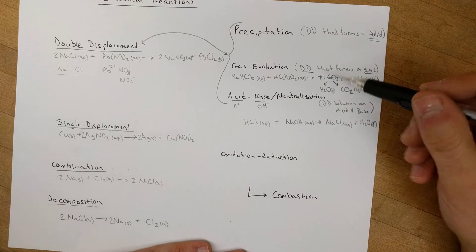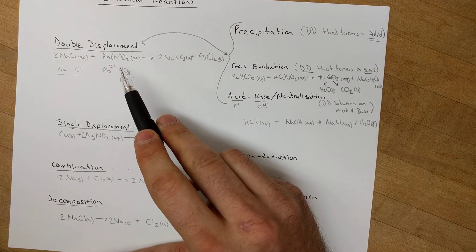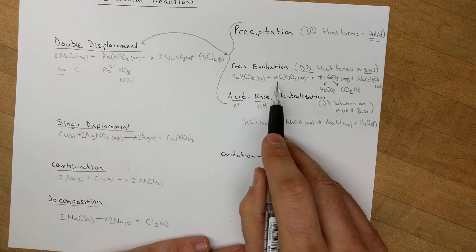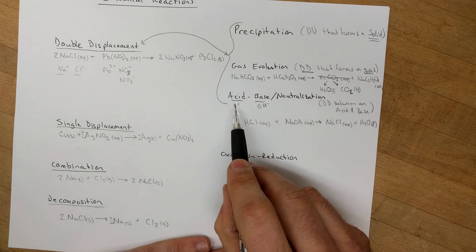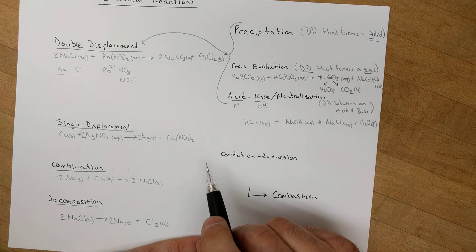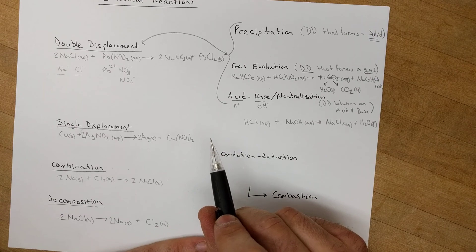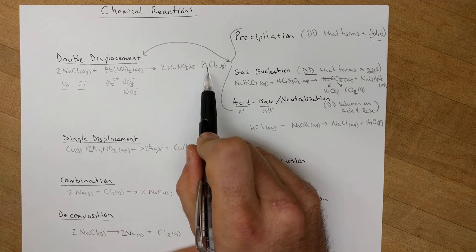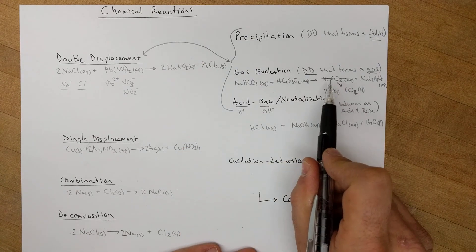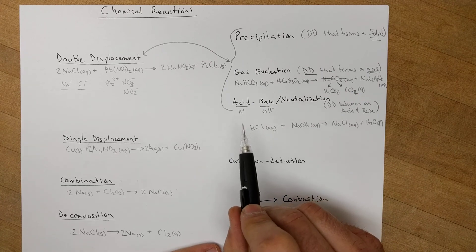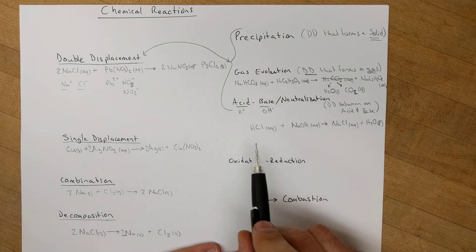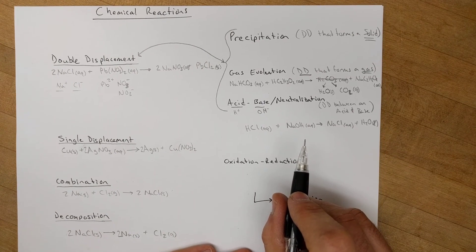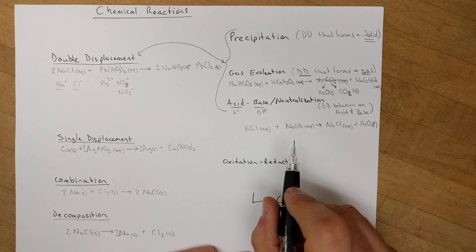So those are our three types of double displacement reactions: precipitation, gas evolution, and acid-base neutralization. It's good to recognize when you're seeing these that they start out as a double displacement setup — a cation and anion you can swap to predict the products. Then check whether a solid is formed as in precipitation, whether a gas evolution product forms, or whether the reactants are an acid and a base.